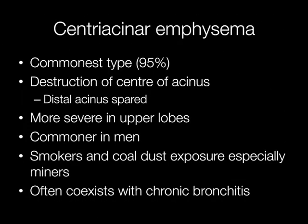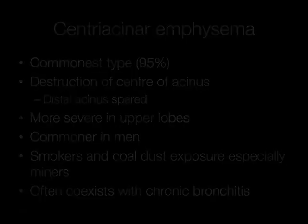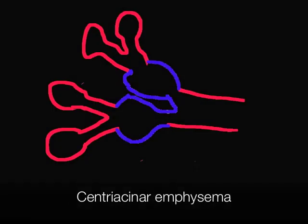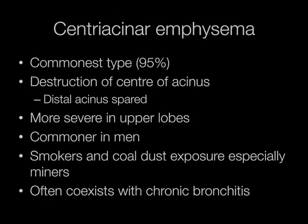By far the most common type of emphysema is centriasinar emphysema, accounting for 95% of cases. The centre of the acinus is destroyed with sparing of the distal acinus. The condition is more severe in the upper lobes, commoner in men, and it is the type of emphysema associated with smoking and coal dust exposure, especially in miners. Centriasinar emphysema often co-exists with chronic bronchitis.